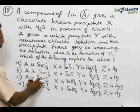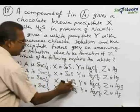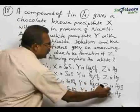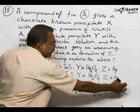C, A is SnCl2, X is SnSO4 that is sulphate, Y is Hg2Cl2, Z is HgS mercury sulphide.